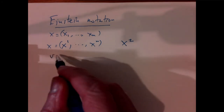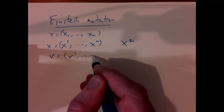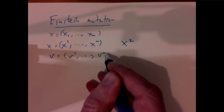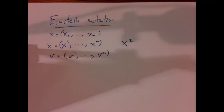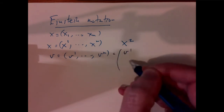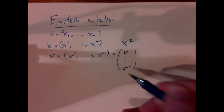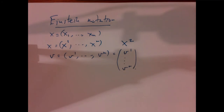Similarly, we'll write every vector as having components v¹ to vⁿ, and we usually write our vectors as columns v¹ to vⁿ. So that gives us some of the notation we want to think about.